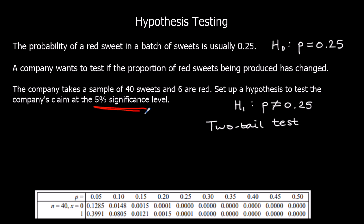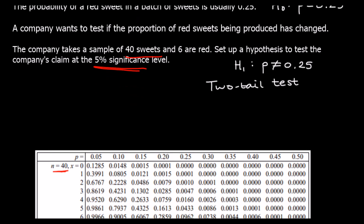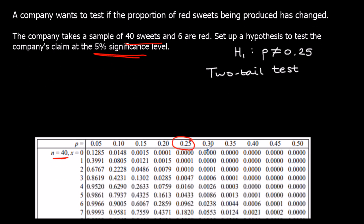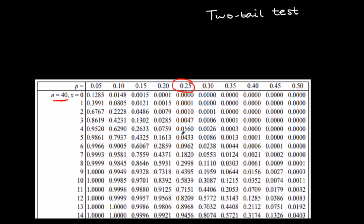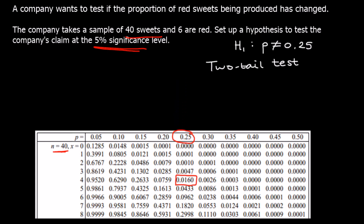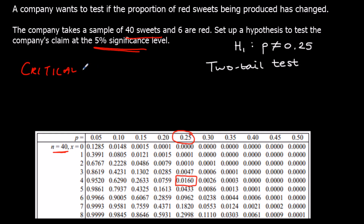We have two critical regions this time. n is 40, so we find the table where n is 40, and our null hypothesis probability is 0.25. We're looking at 2.5% at the top and 2.5% at the bottom. At the bottom we've got 1.6% up to x = 4, and the next one up is 4.3% — so we use x less than or equal to 4, keeping within the 2.5% threshold.